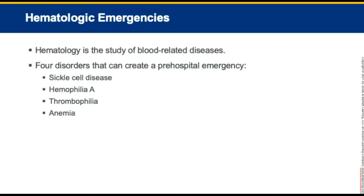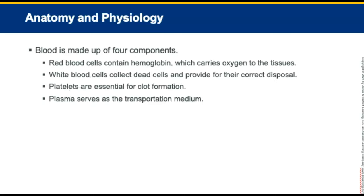Moving to hematologic emergencies, hematology is the study of blood-related diseases. Three disorders that can create pre-hospital emergencies are sickle cell disease, hemophilia, thrombophilia, and anemia. Blood is made up of four components: erythrocytes (red blood cells), leukocytes (white blood cells), platelets, and plasma. Each component serves a purpose in maintaining the body's hemostatic balance. Red blood cells contain hemoglobin and carry oxygen to the tissues. White blood cells respond to infection and collect dead cells for disposal. Platelets are essential for clotting. Plasma serves as the transport medium for blood components, proteins, and minerals.